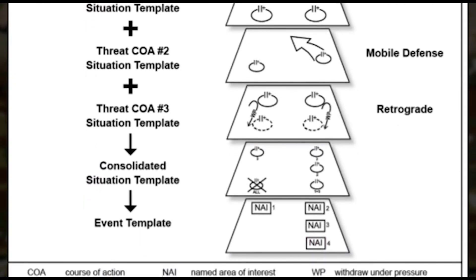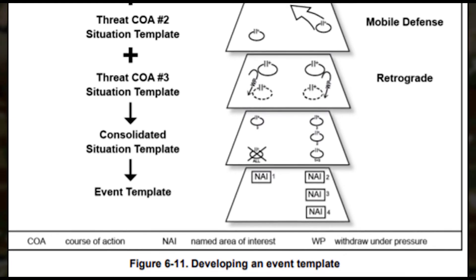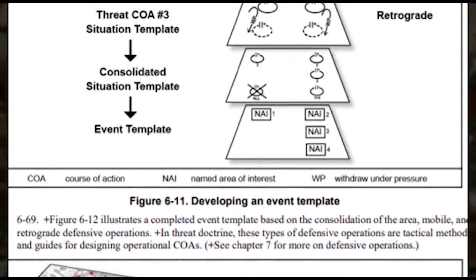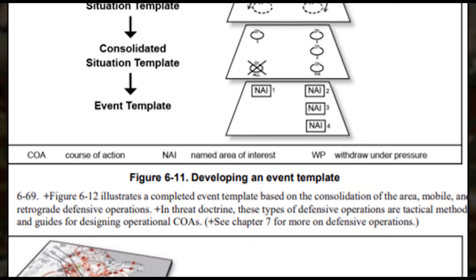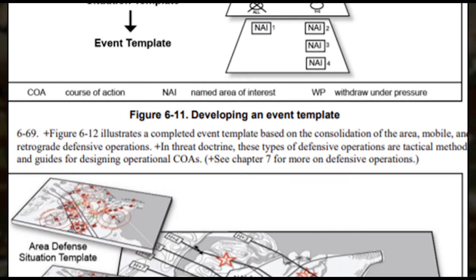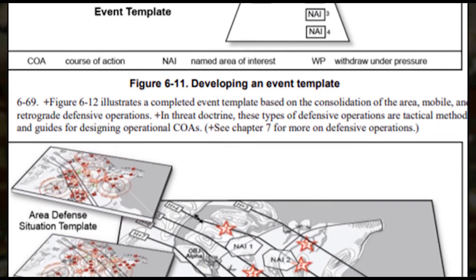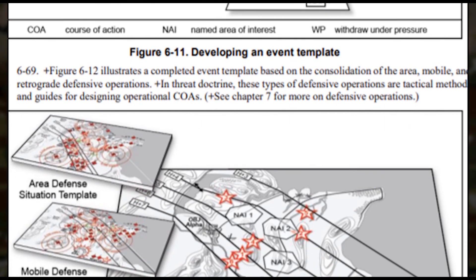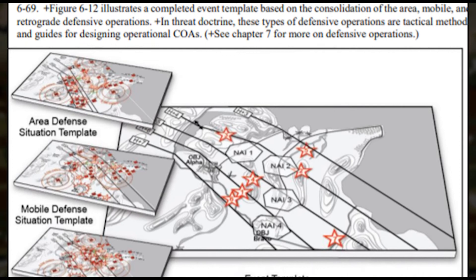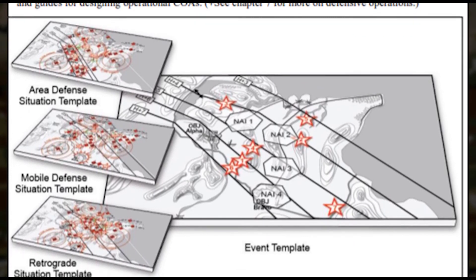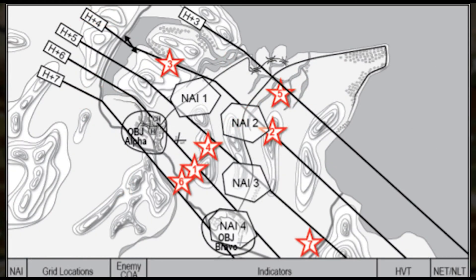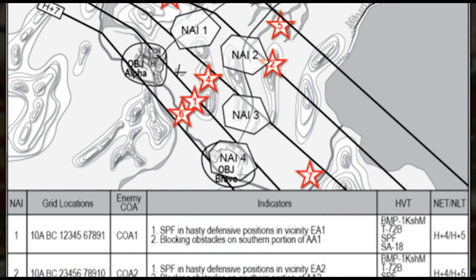Sub-step 2, the event template, is a guide for collection planning that depicts the named areas of interest where activity or lack of activity indicates which threat COA has been adopted. This overlay is used during MDMP COA analysis to confirm or deny the threat through wargaming. It also develops the information collection overlay, collection matrix, and formulates the priority of intelligence requirements. It comprises timelines based on rates of march, NAIs to identify collection points, and decision points where a threat commander must make a decision on how to continue operations. The event matrix enables a cross-referencing process that links indicators, threat decision points, and activities to determine which COA is being executed.